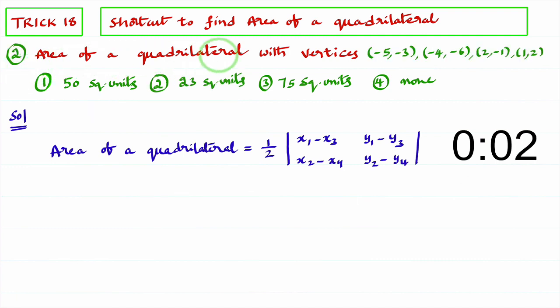You observe the second question. Area of quadrilateral with these vertices. First, I'll consider given vertices. Minus 5, minus 3, minus 4, minus 6, 2, minus 1, 1, 2.